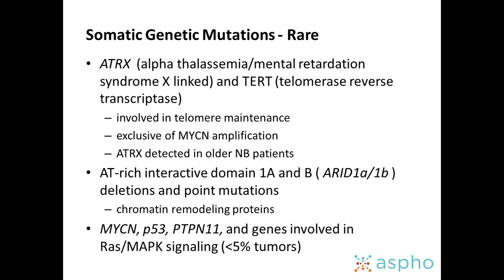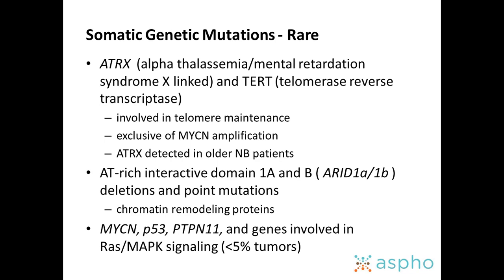Other rare mutations are now being reported in neuroblastoma. The more commonly described ones with prognostic ramifications include two abnormalities in telomerase pathways — ATRX and TERT. ATRX is very interesting in that the majority of adolescents with neuroblastoma have ATRX mutations, while it is very rarely found in young children. There are also mutations in ARID-1A and 1B in chromatin remodeling.